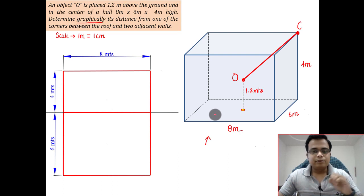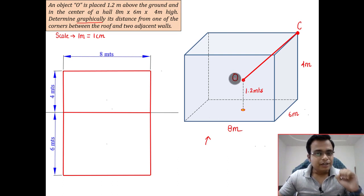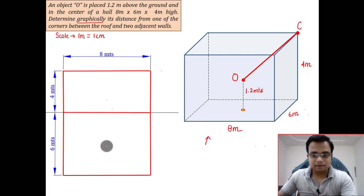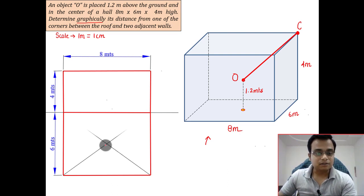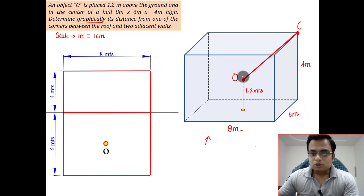Now let us try to make the top view of this object. When you view this object from the top, it would appear as if it is exactly at the center, somewhere here. You need to locate the center, and the best way you can do so is with the help of the intersection of diagonals. That is precisely the center. This object appears as if it is here in the top view, right at the center of the floor.